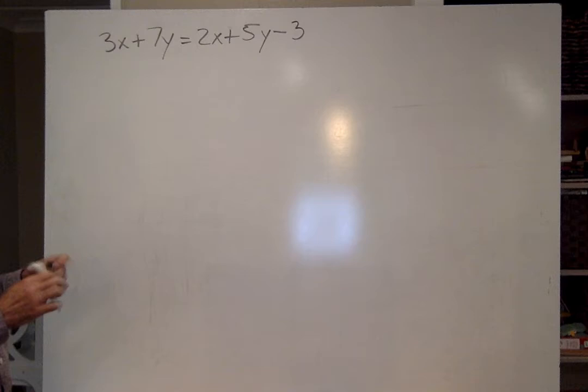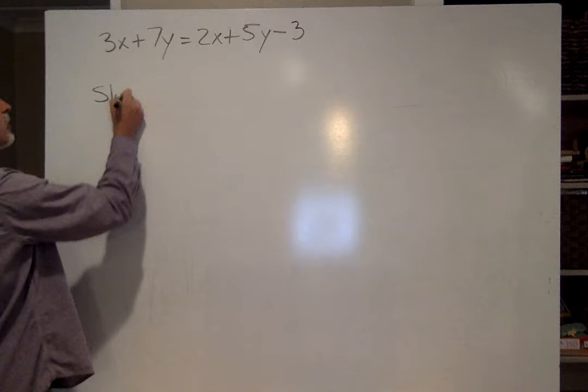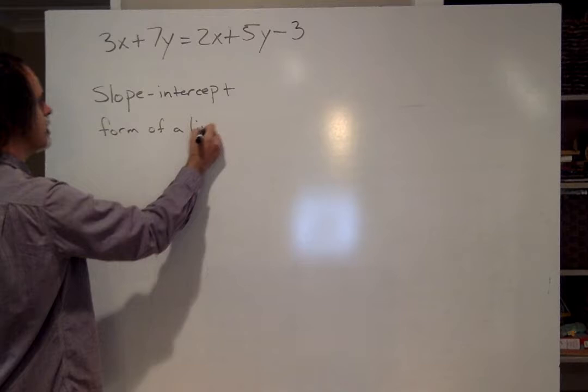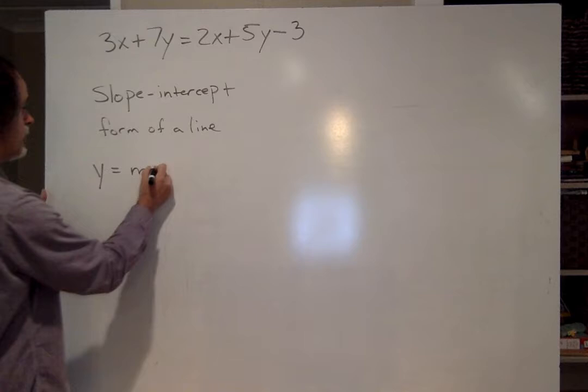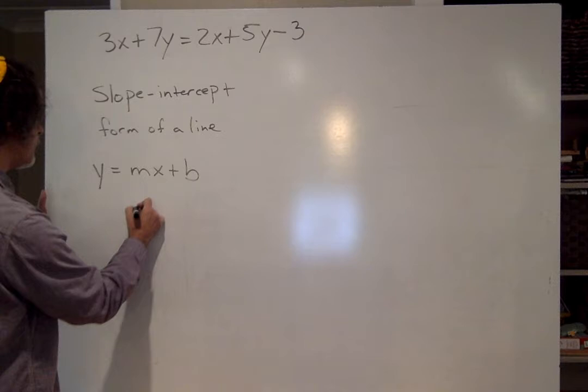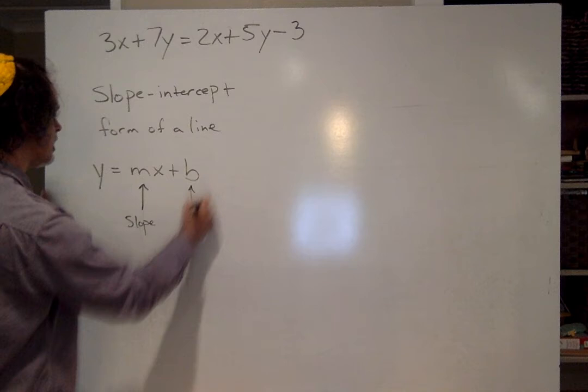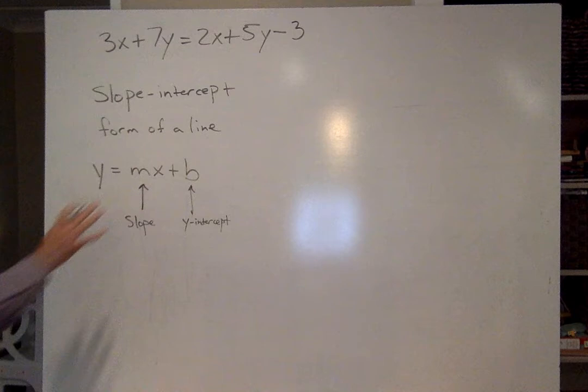And these are pretty common. The first one is called the slope-intercept form of a line. And that is y equals mx plus b. Now, we've already seen this one quite a bit. We've used it many times in the sections 7.1 and 7.2. This m is the slope. And this b is the y-intercept.